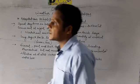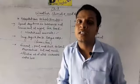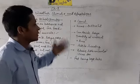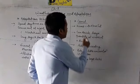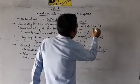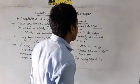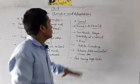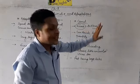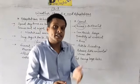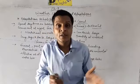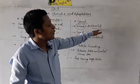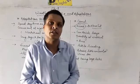Last class yaani class six mein aap logon ne camel ke baare mein padha hoga. Camel ke paas ek hump hota hai jo ki fat store karta hai. Camel ko ship of desert bolte hain. Yeh hump fat store karta hai, aur jab inke paas food ki shortage hoti hai toh ye isi fat ka use karte hain for surviving.